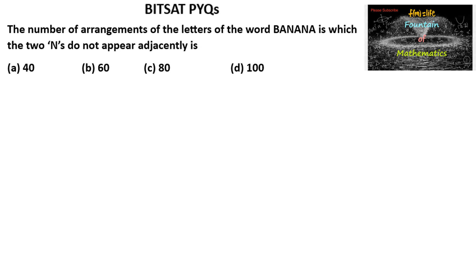The number of arrangements of the letters of the word BANANA in which two N's do not appear adjacently. Here the letters of the word B-A-N-A-N-A: B is repeating only one time, A is repeating three times, and N is repeating two times.